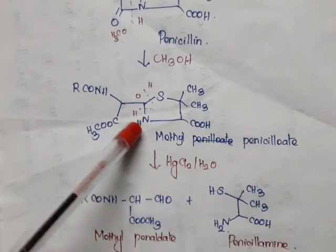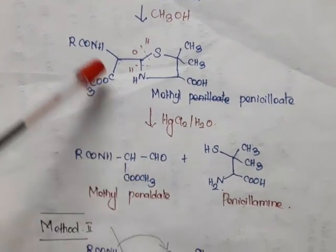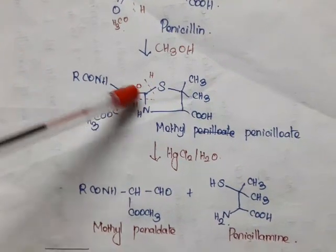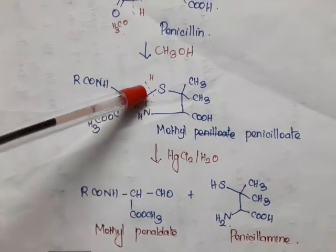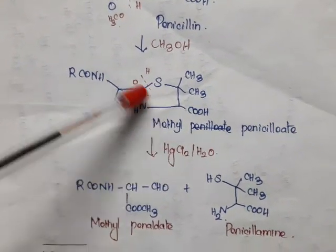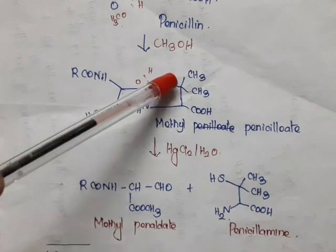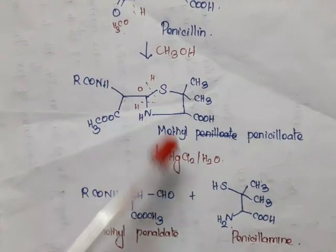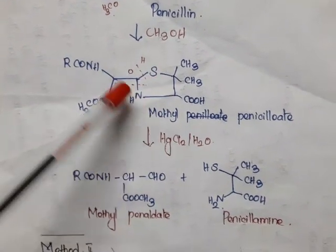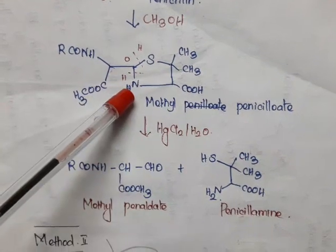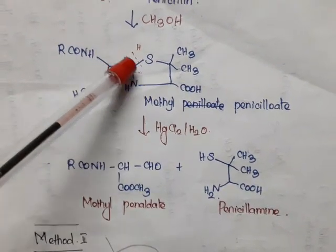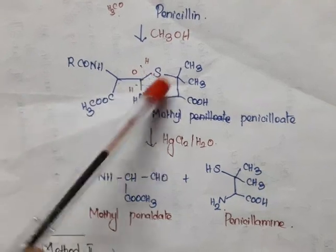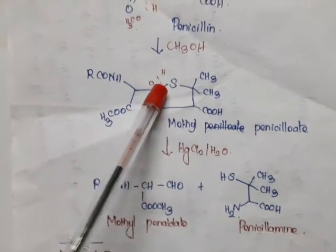Now this methyl penicilloate on hydrolysis — there may be cleavage. The bond between carbon and nitrogen is broken and the bond between carbon and sulfur is also broken. From water, one H is added with sulfur, one H is added with NH, and one oxygen is added with the CH present there.